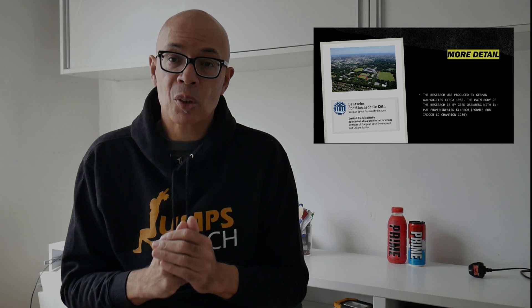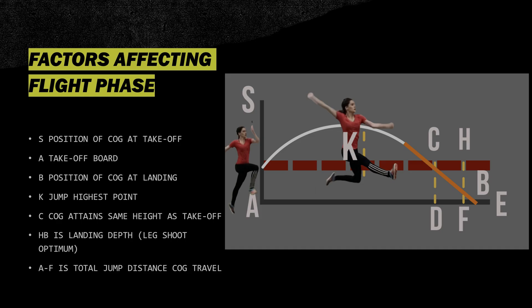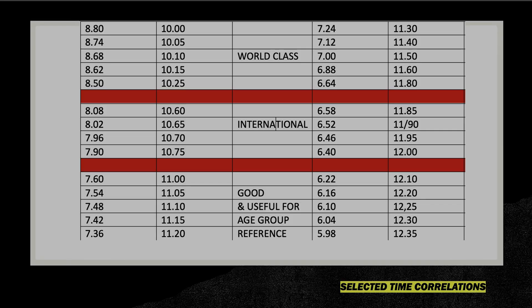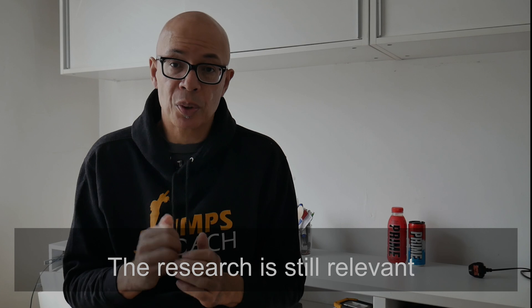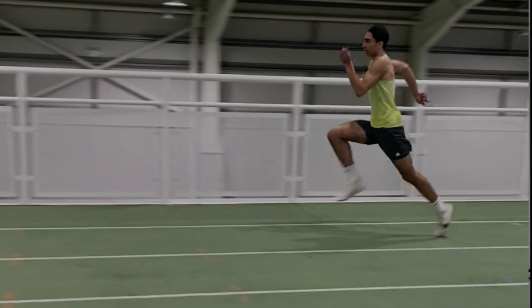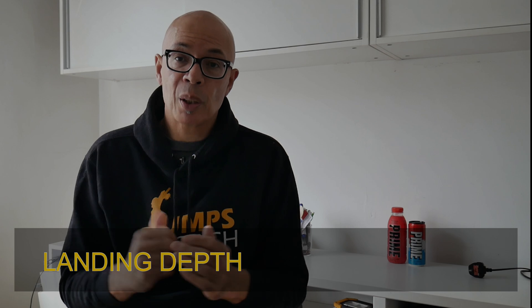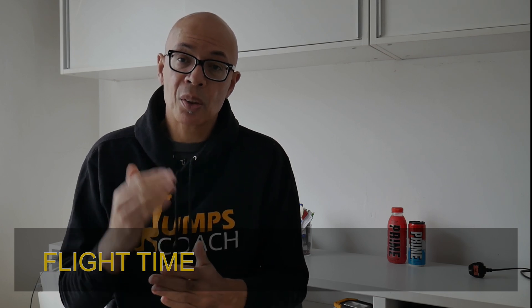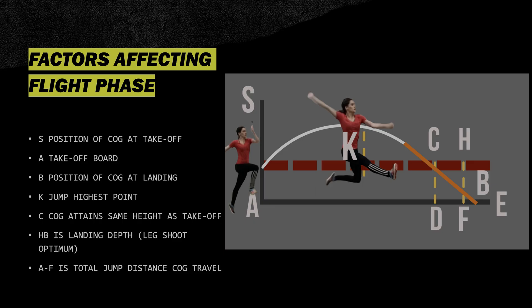This specific research looks at flight time and correlates 100-metres speed to jump distance, and I believe that is particularly relevant in this day and age despite the research being over 40 years old. In it we look at the effects of speed on takeoff, what the Germans call landing depth, and also time in the air. Hopefully, understanding those factors is going to give you a greater understanding of the influences on the long jump. So let's get started.